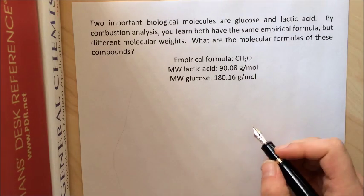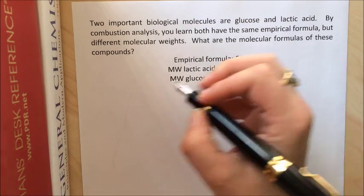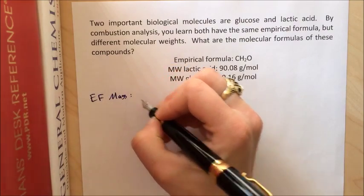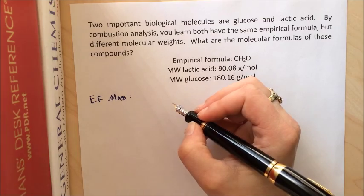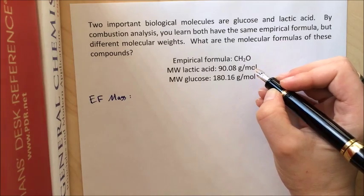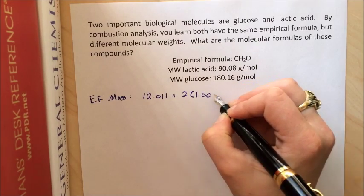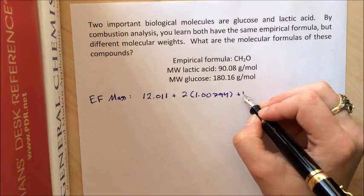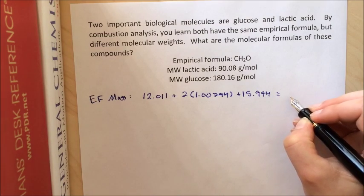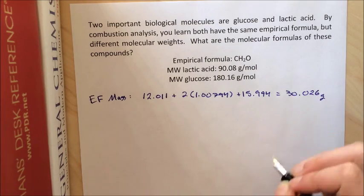Remember, the first step in any of these situations is we first want to find out the mass of this empirical formula unit. So we're going to write that down right here. And just like when calculating a molecular mass, you're just going to multiply the atomic mass by the number of atoms of that particular atom. So we get 12.011 plus 2 times 1.00794 plus 15.9994. You crunch that through and you get 30.026 grams in that formula unit.